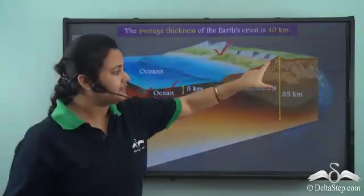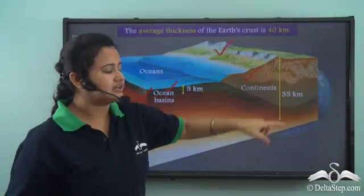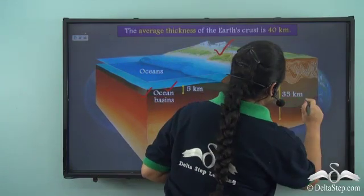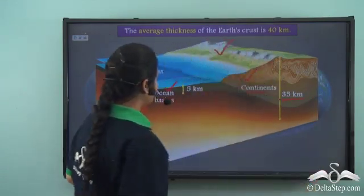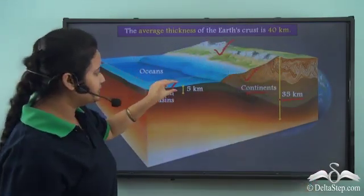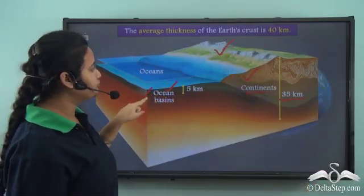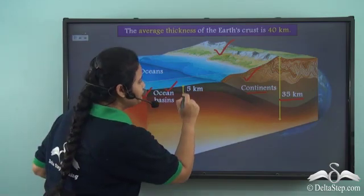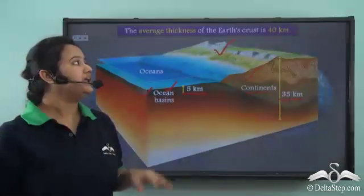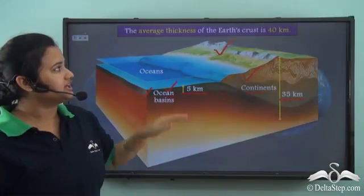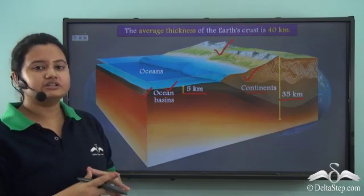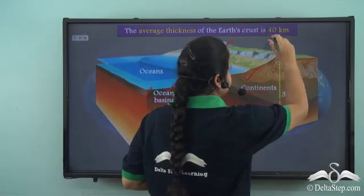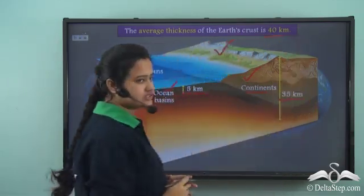The average thickness of continental crust is 35 kilometers, while the average thickness of ocean basins is only 5 kilometers. Overall, the average thickness of the Earth's crust is approximately 40 kilometers.